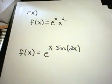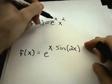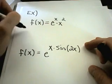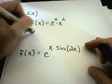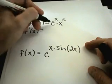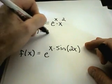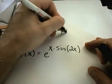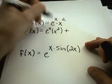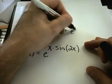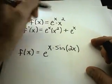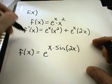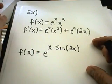Suppose we find the derivative of e to the x times x squared. I see a product, so I'll use the product rule. The derivative of e to the x is e to the x — leave the x squared term alone. Plus: leave the e to the x term alone, and take the derivative of x squared to get 2x. That's the derivative — finished.